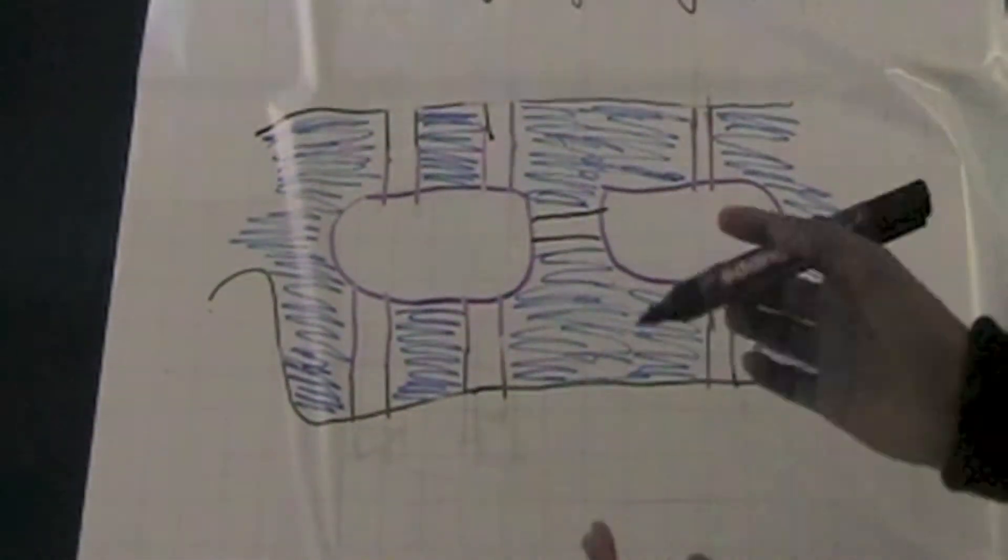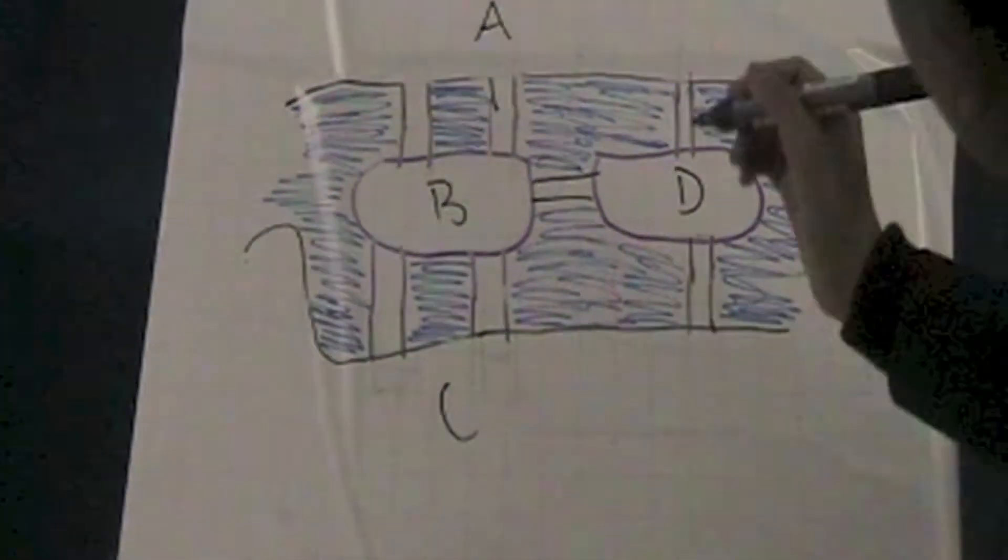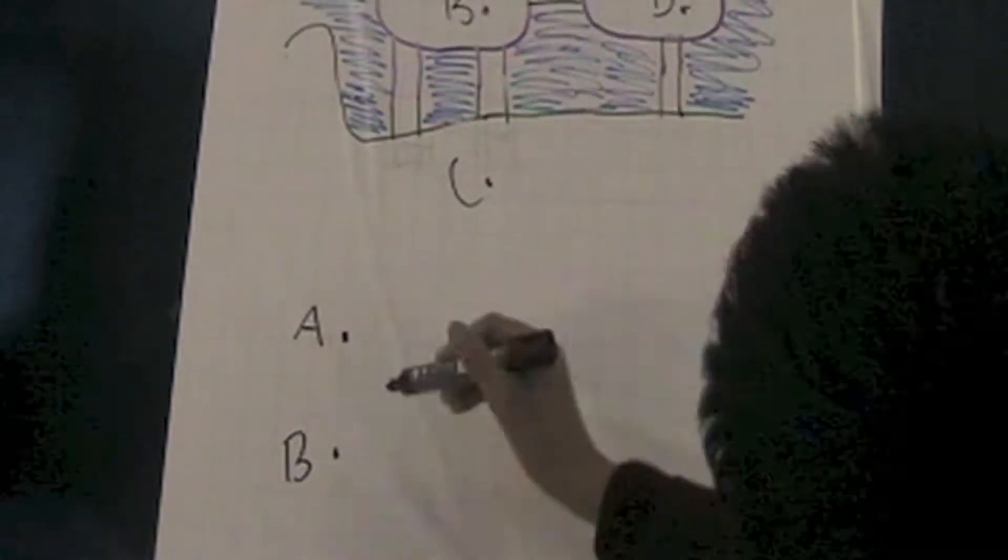To help him solve the problem, Euler gave each of the land masses a different letter. He represented each of these by a vertex: A, B, C and D.